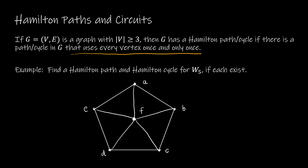See if we can find a Hamilton path and a Hamilton cycle for W5, the wheel graph, if each exists. If I start at A, I want to visit every vertex once and only once and end up back at A. So I travel to E, then to F, then to D, then to C, then to B, then back to A. So the route A, E, F, D, C, B, A — that is a Hamilton cycle.